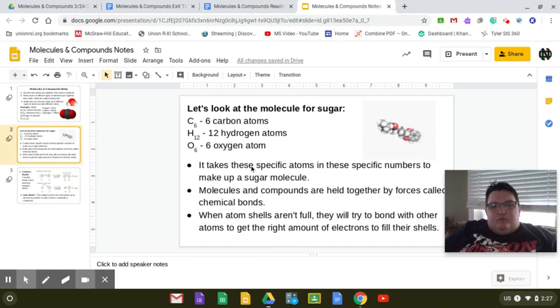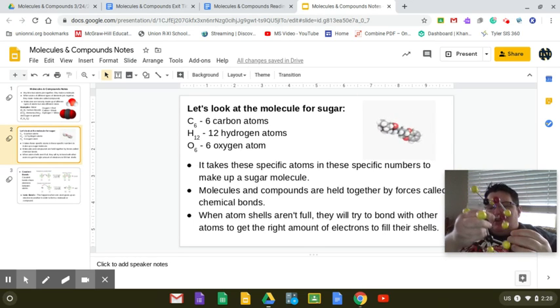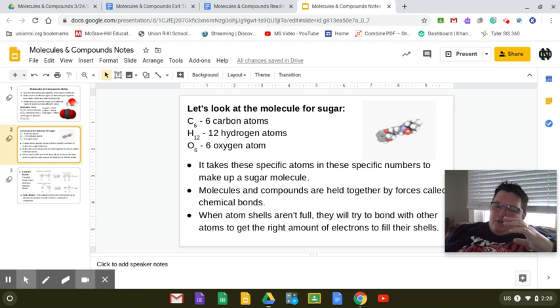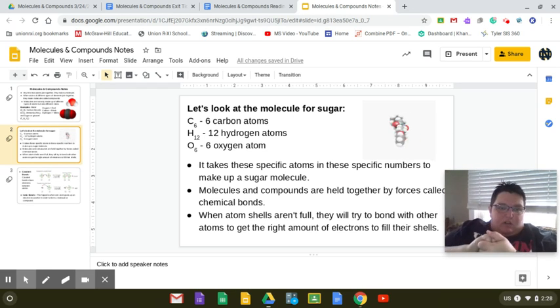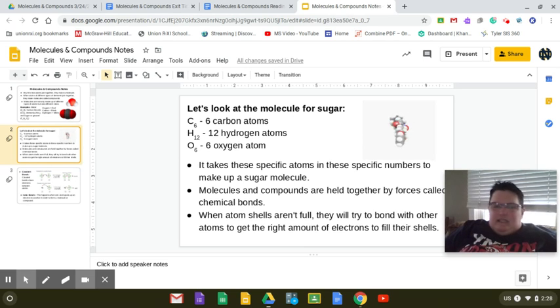Next, it says it takes these specific atoms and these specific numbers to make up a sugar molecule. All right. So in other words, if I were to take off some of these, if I were to lose a hydrogen or lose a carbon or lose two oxygens, whatever, then it's not going to be sugar anymore. It has to be put together in exactly the right way in the exact right amount in order to be sugar. Molecules and compounds are held together by forces called chemical bonds, which we already went over. So that's what these little springs here represent. It's basically kind of the atoms holding onto each other with those electrons. By sharing those electrons. And when atom shells aren't full, they'll try to bond with other atoms to get the right amount of electrons to fill the shells. Again, we've already went over that, just kind of a reminder. So you're always trying to get in complete outer shell there.